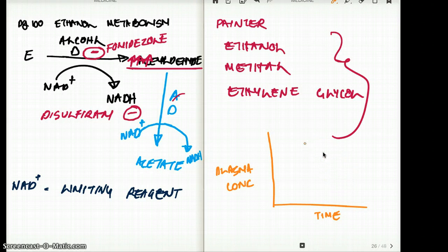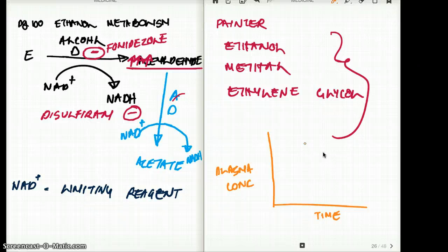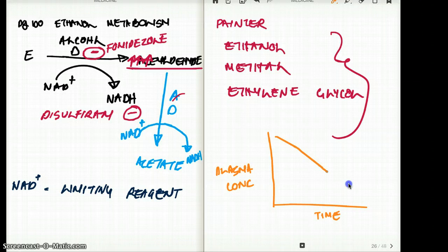Zero order kinetics meaning that a certain amount is excreted throughout, no matter how much the concentration is in your system. Let's say two milliliters is excreted per hour. That number is going to remain constant. No matter whether you have more concentration or less concentration of the substance, you are going to have that fixed amount that the urine can get rid of. That is zero order kinetics.